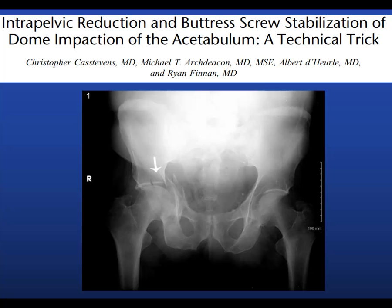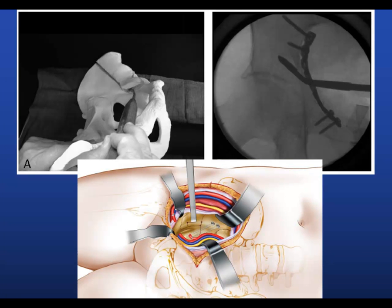Dome impaction is a real concern, and here's one way it can be addressed. Here's an example of that dome impaction, and intraoperatively through the infrapectineal window. The patient's feet are this way, head this way. The surgeon is operating on the opposite side of the patient — when you do these Stoppa windows and infrapectineal approaches, you typically stand on the opposite side. The femoral head is in here trying to come this way, so you want to come from this side and buttress up against it.